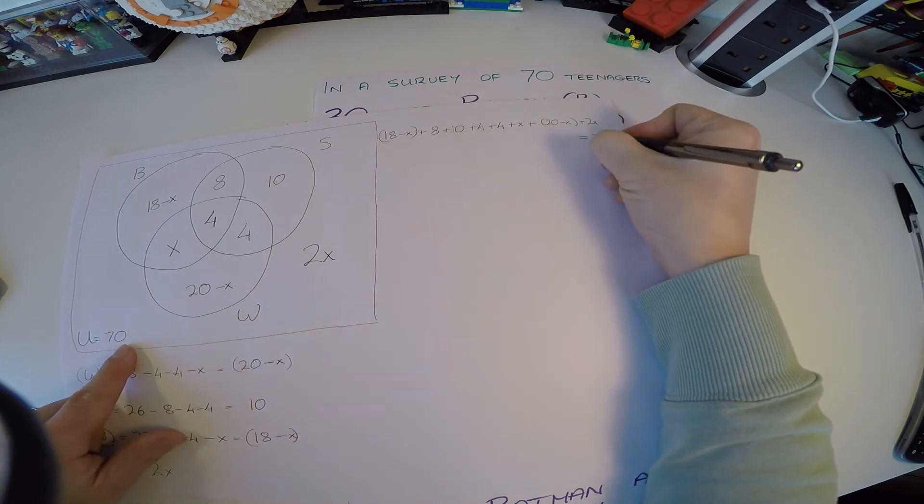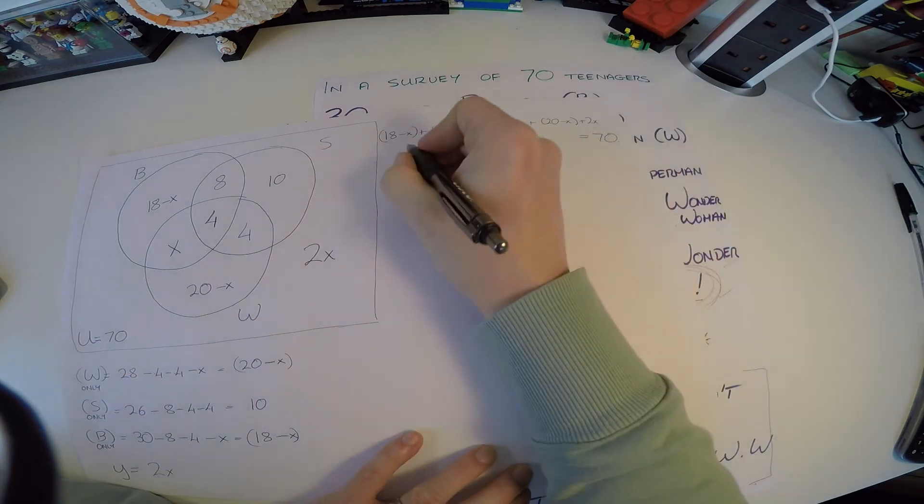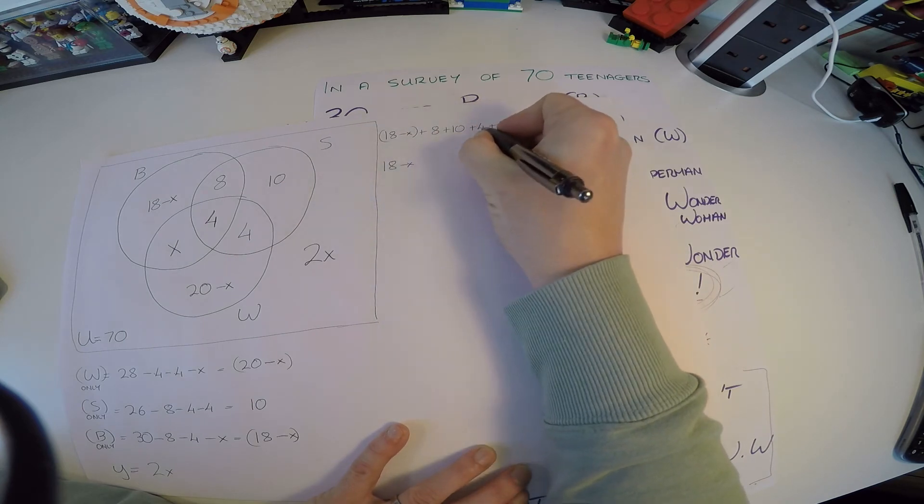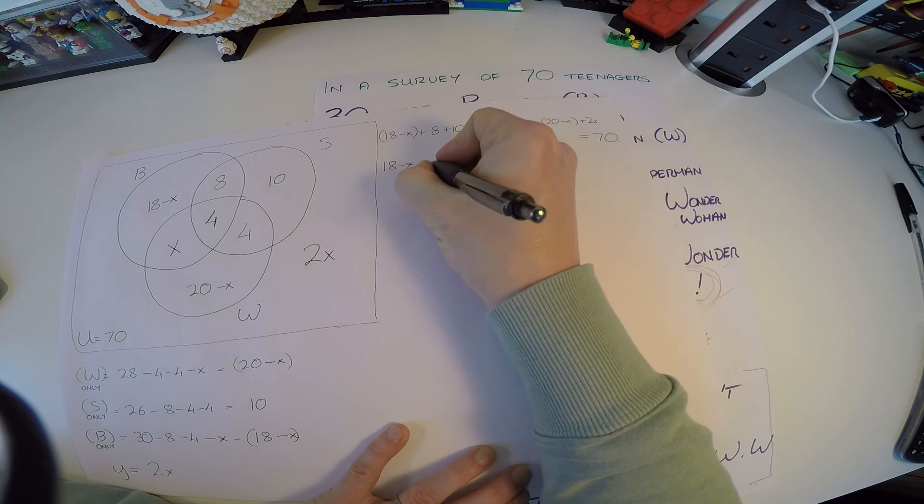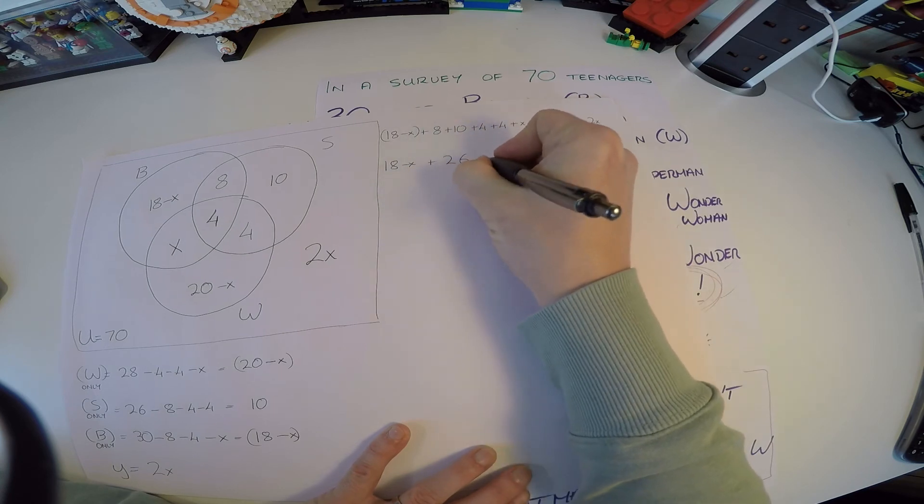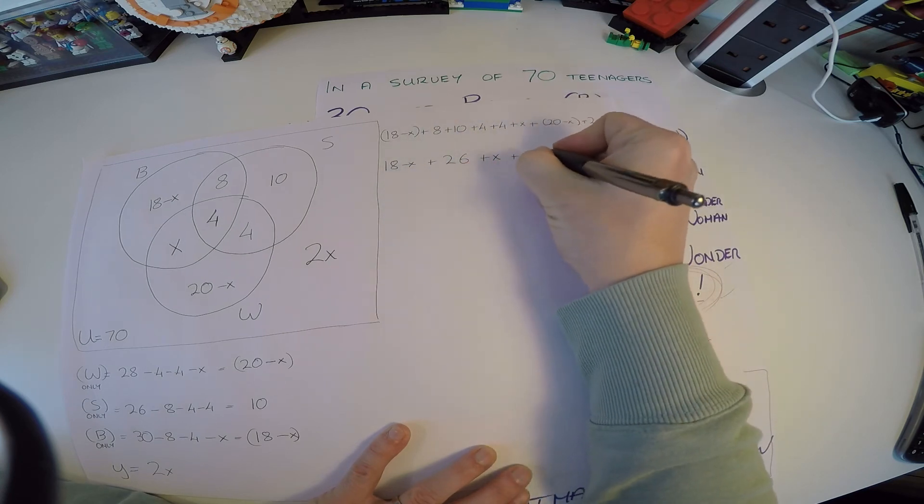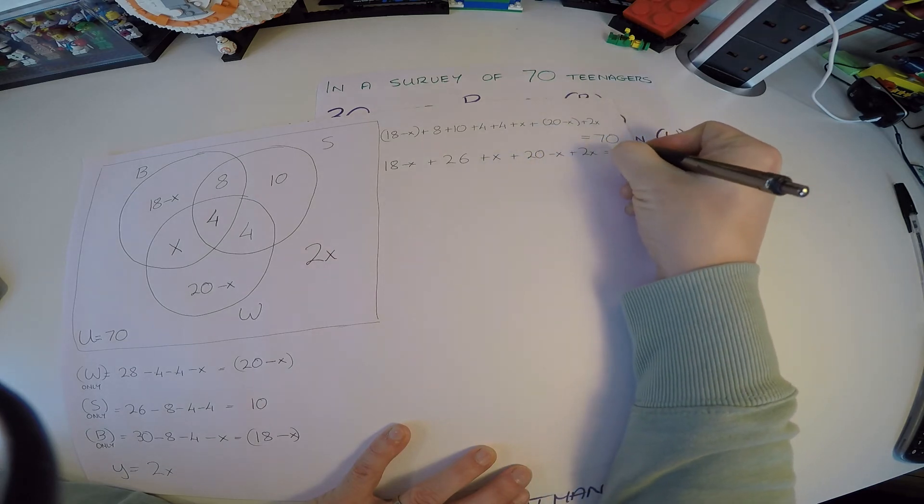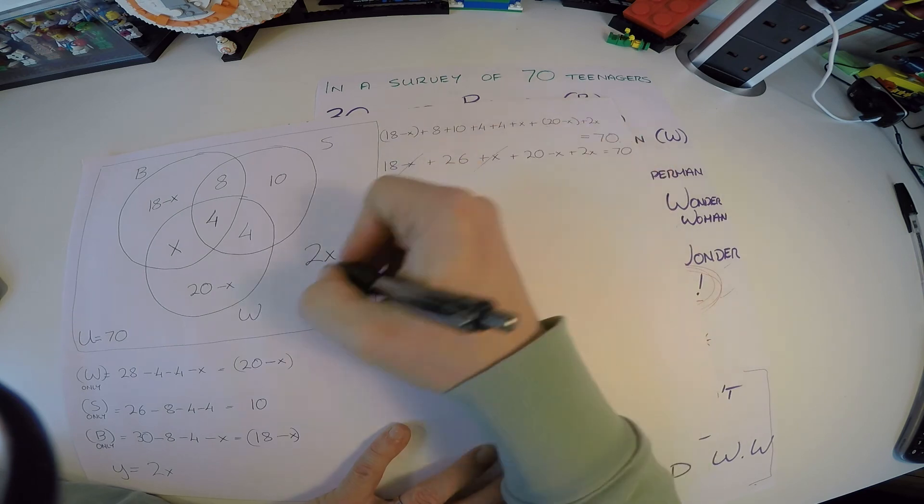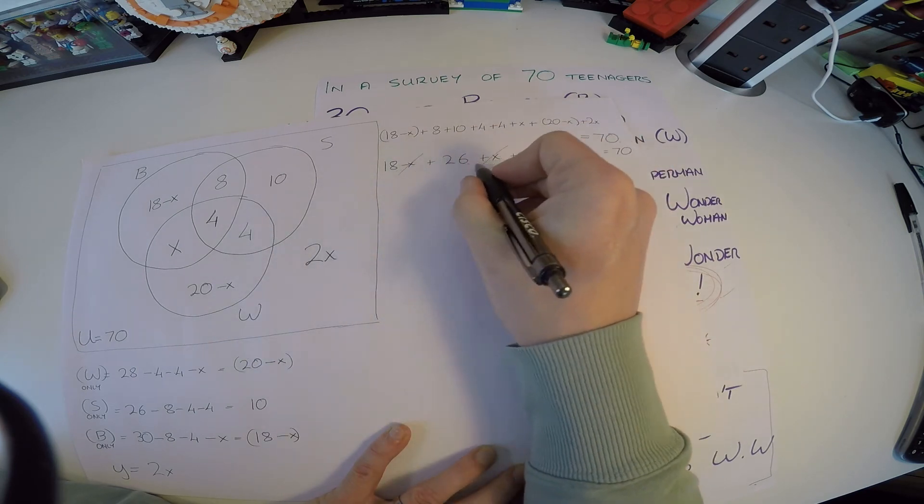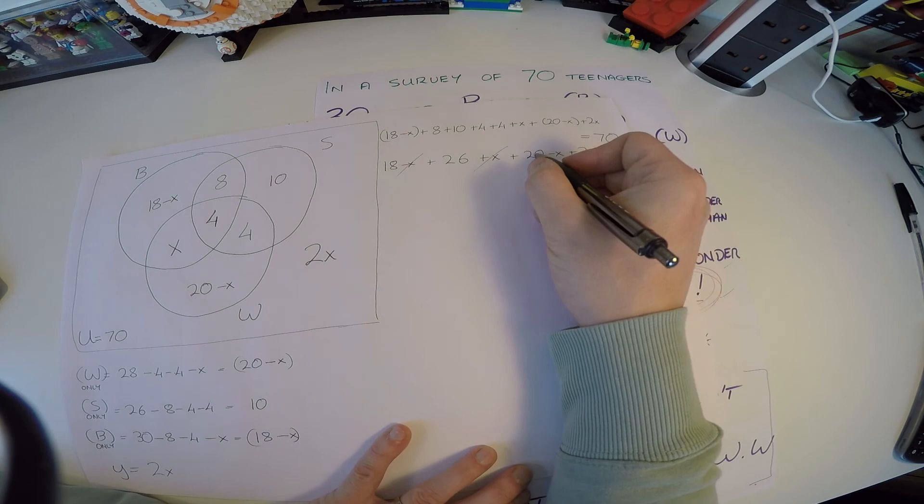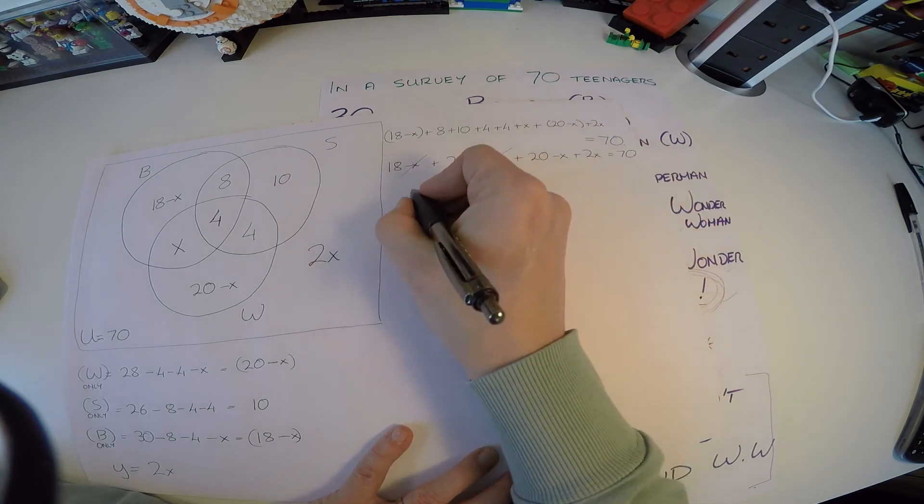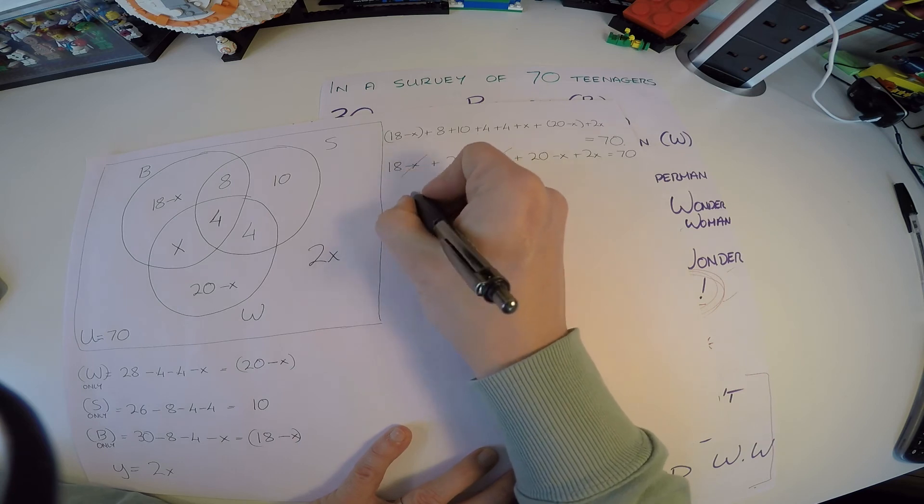So let's see what we can do here. Well, let's leave 18 minus x out the front. So 8 and 10 is 18 and 4 is 22 and 4 is 26, so those numbers in the middle are 26 plus x, now plus 20 minus x plus 2x still equal to 70. So we have a minus x and a plus x, they go. And 18 and a 26 and a 20, what do they all make up to? So 26 and 20 is going to be 46 and 8 is going to be 64 when we do the 18. So we have 64 for this number, this number, and this number.